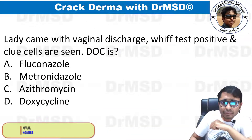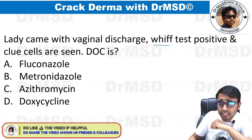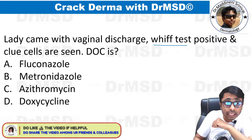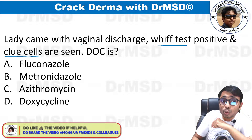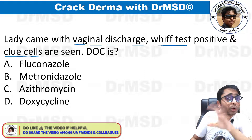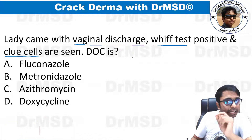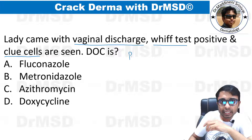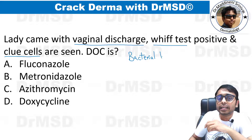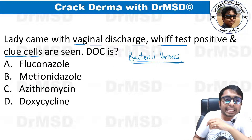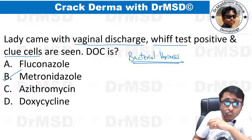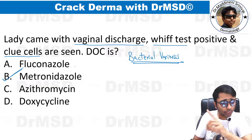A lady came with vaginal discharge and the test is positive — clue cells are seen. With all these clues given in the question, the diagnosis is bacterial vaginosis. The treatment answer here is metronidazole.